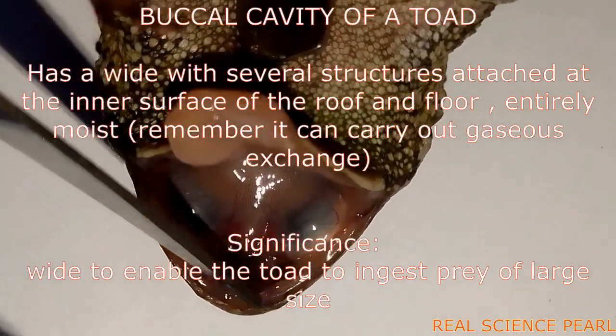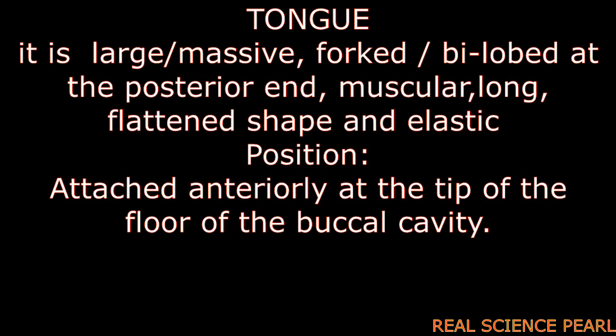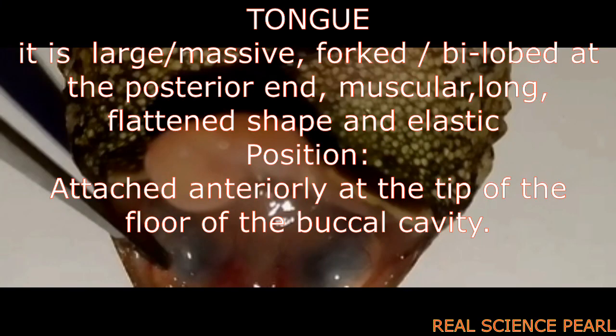The tongue of the toad is attached anteriorly so that it can be flicked out quickly at a prey, even at a relatively far distance. The tongue is forked — bilobed — and is also large, long, and muscular. It is flattened in shape and elastic. Its long and elastic nature allows it to catch small prey at relatively far distances. It is thicker for grasping the prey, and flattened to increase surface area for trapping the prey.